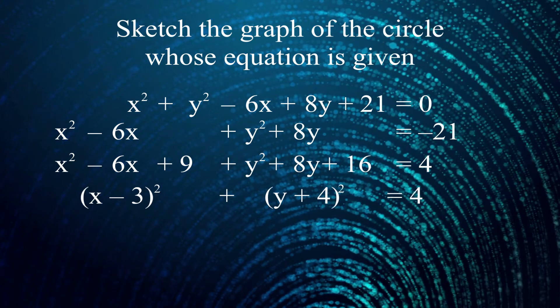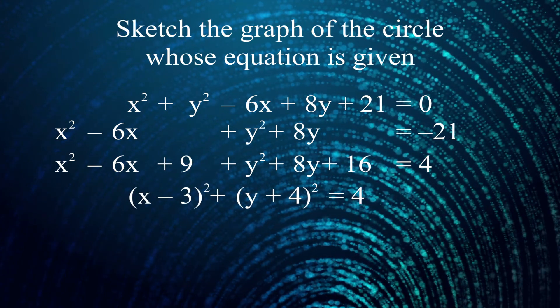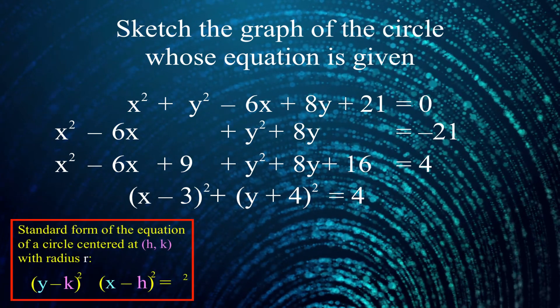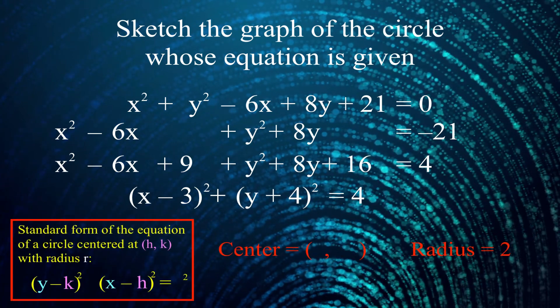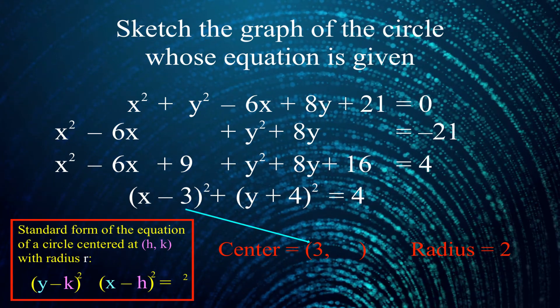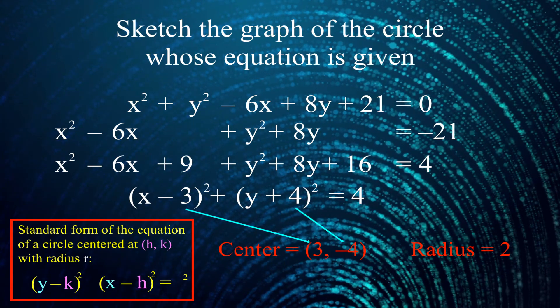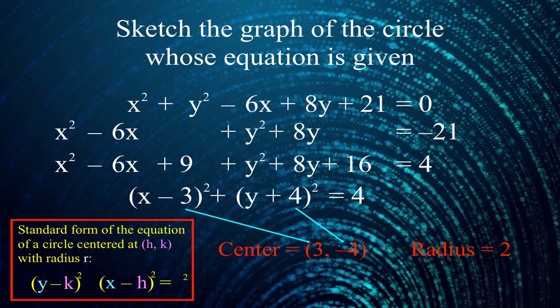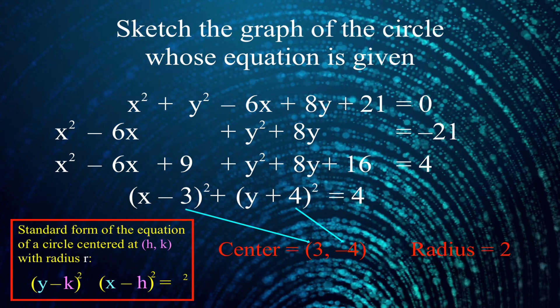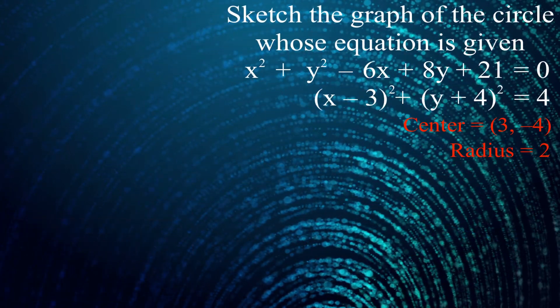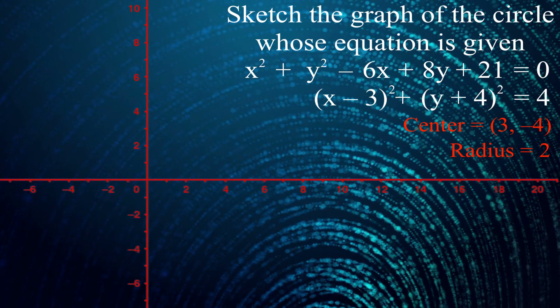My equation is now written in the standard form of a circle, so all that's left is for me to stare at it and analyze. The negative 3 in the parentheses with the x tells me that the x-coordinate of the center is positive 3. The positive 4 in the parentheses with the y tells me that the y-coordinate of the center is negative 4. And I see that 4 over on the other side of the equation, so the square of the radius is 4, so the radius must be equal to 2. My circle's centered at 3, negative 4, and the radius is 2. With that information, I can draw the circle.